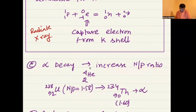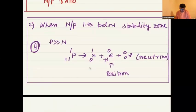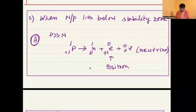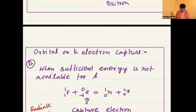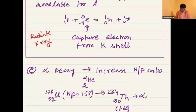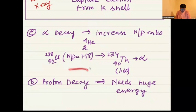For very heavy nuclei beyond the stability zone, alpha decay and direct proton decay are also possible processes.